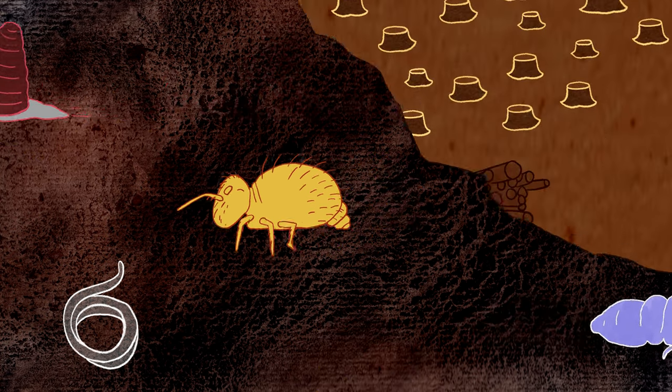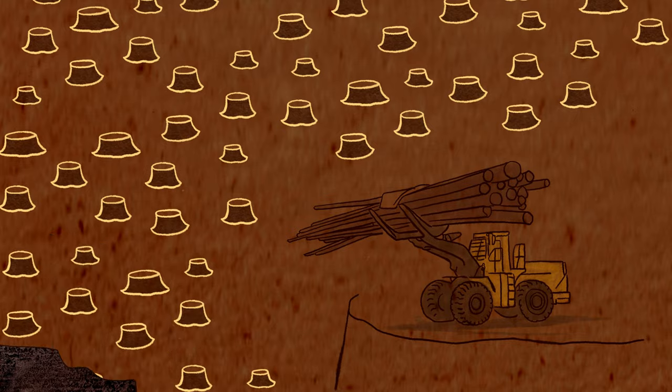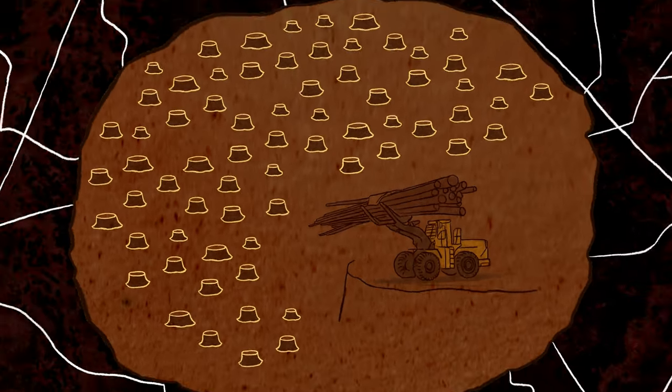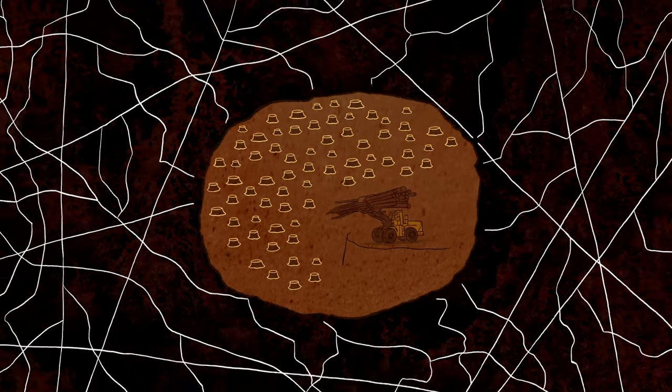We are destroying the planet's fungal networks at an alarming rate through activities like industrial agriculture and deforestation. When we do so, we jeopardize the health and resilience of the ecosystems on which we depend.